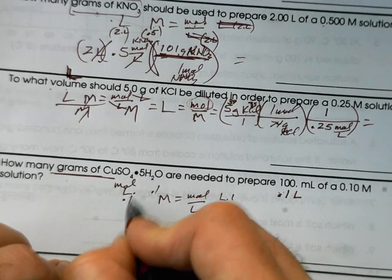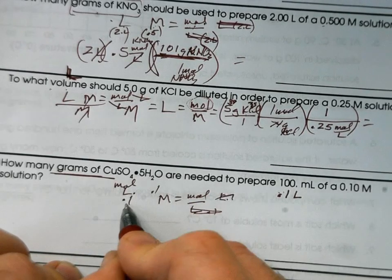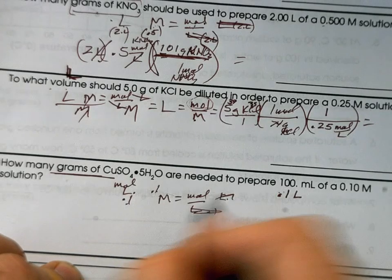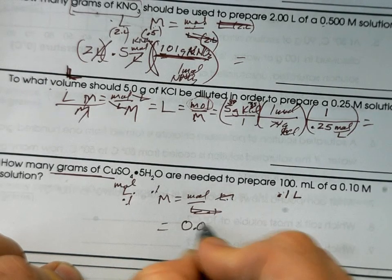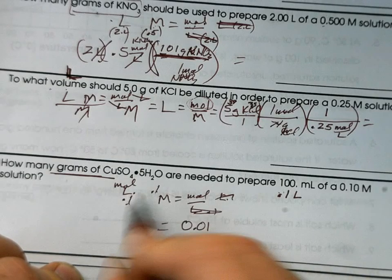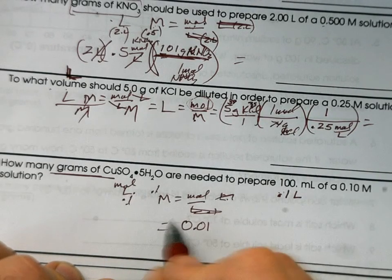See, those will cancel out. What's 0.1 times 0.1? 1, 0, 1. So that will come out to be 0.01. That's going to be the number of moles.